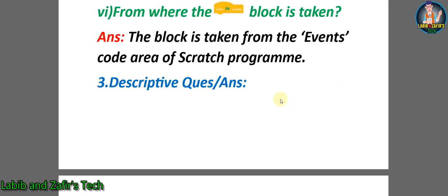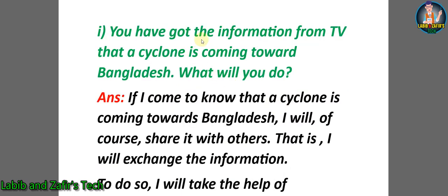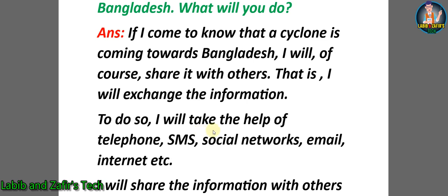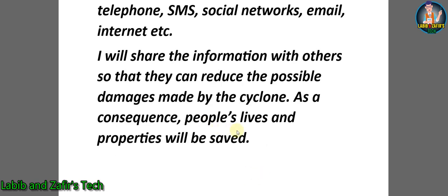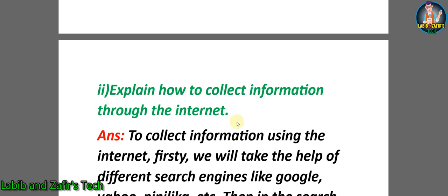Now let us go through some descriptive question answers. Number one: you have got information from TV that a cyclone is coming toward Bangladesh — what will you do? Answer: if I come to know that a cyclone is coming towards Bangladesh, I will share it with others by exchanging the information. To do so, I will take the help of telephone, SMS, social networks, email, and internet. I will share the information so that people can reduce possible damages made by the cyclone, saving lives and properties.